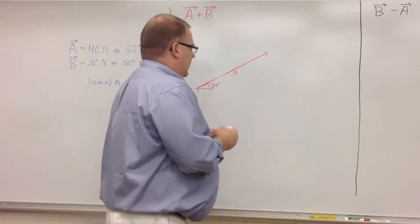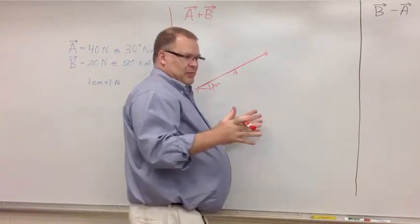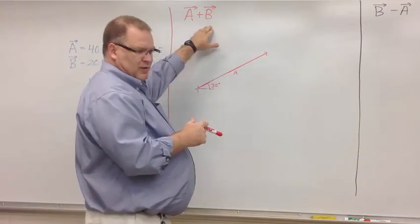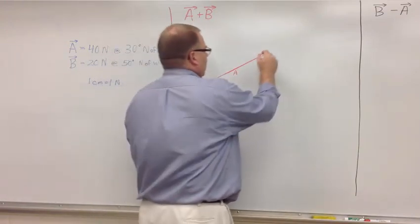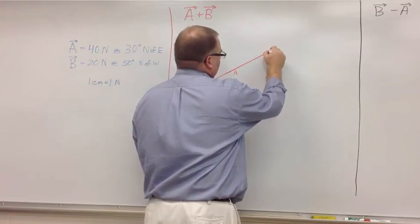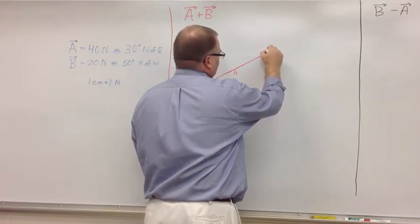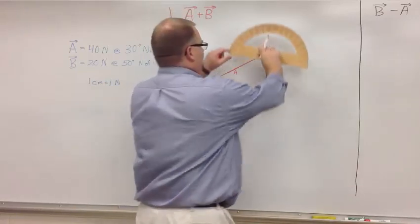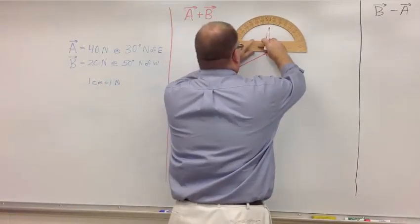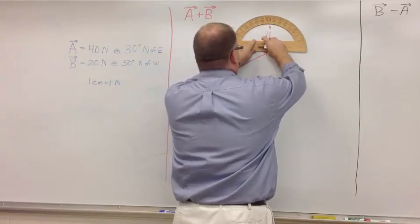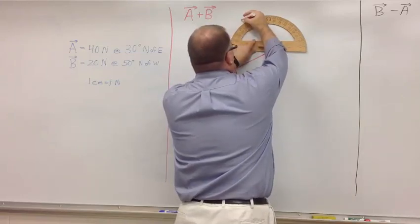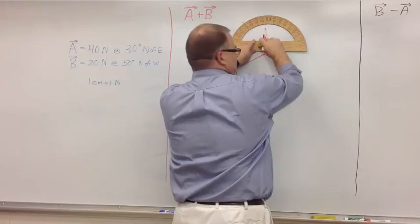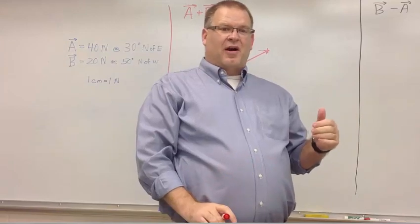So next is vector B. And just like on a treasure map, you do step one, vector A. Then you do step two, vector B. But you're starting again with an origin, right at the end of vector A. And I'm going to draw 50 degrees. This time though, I start on the left side of my protractor, because it's 50 degrees north of west.